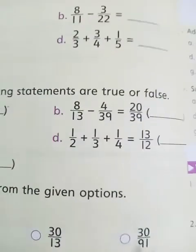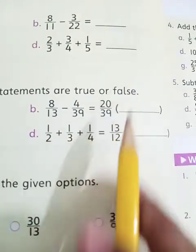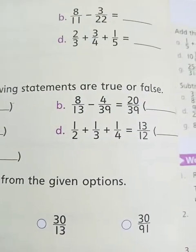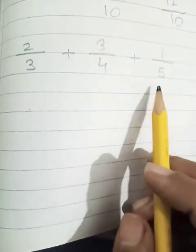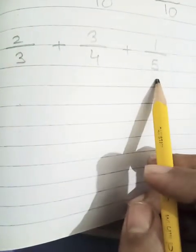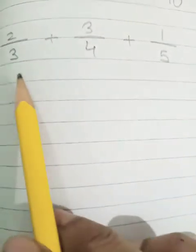Come to part d. 2 upon 3 plus 3 upon 4 plus 1 upon 5 equals dash. Let's do it. 2 upon 3 plus 3 upon 4 plus 1 upon 5 and we have to add these terms. First we will make the denominator same. So how can we make it same? Because 3, 4, 5, these are those numbers which do not come in each other's table. So what we will do? We will take their LCM.